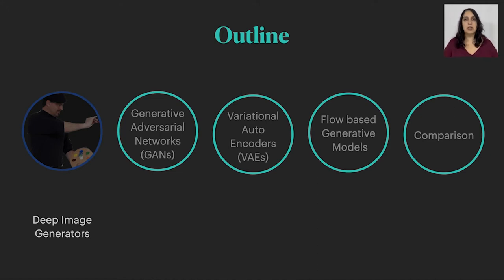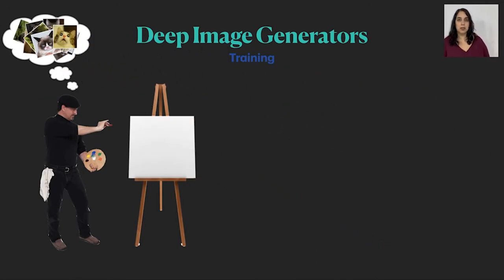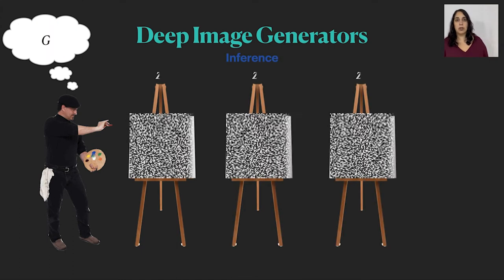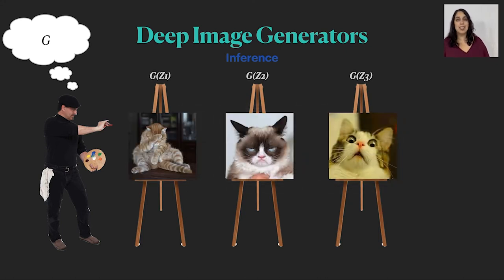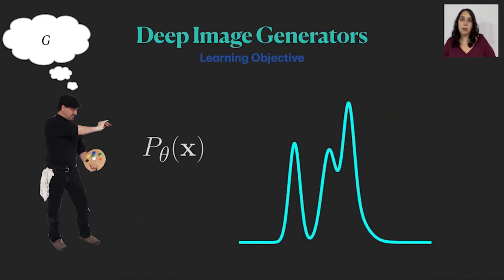Deep image generators can be seen as artists. During training they use many images to learn a model, let's call it G, and in inference they start with random canvases and use G to generate images that look like the ones they have seen in training. So what does this G function learn? Well, ideally we would like it to learn the probability p to generate an image x from the distribution of our training images. This way we can just sample p and generate realistic images.